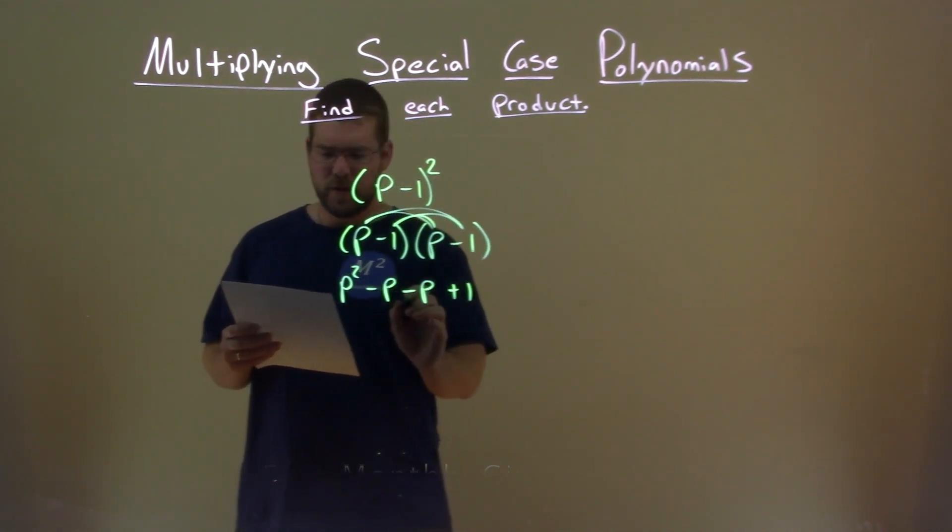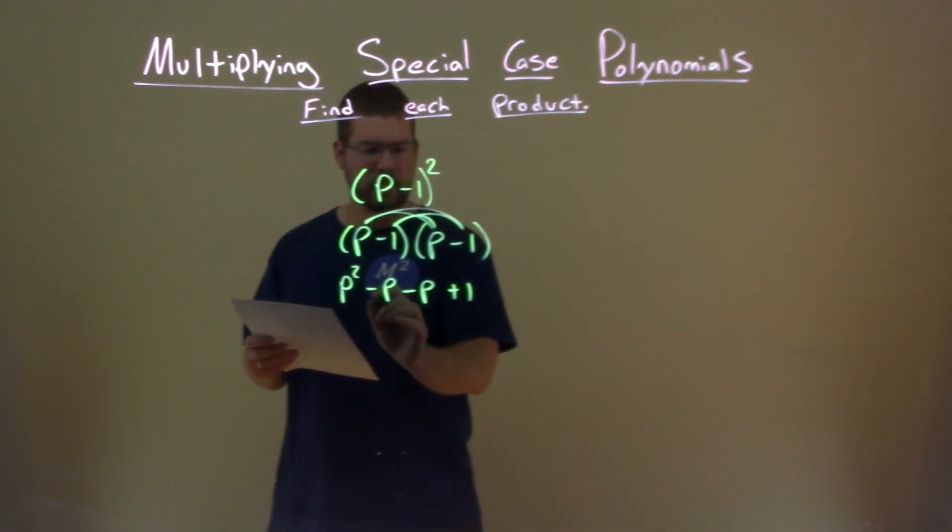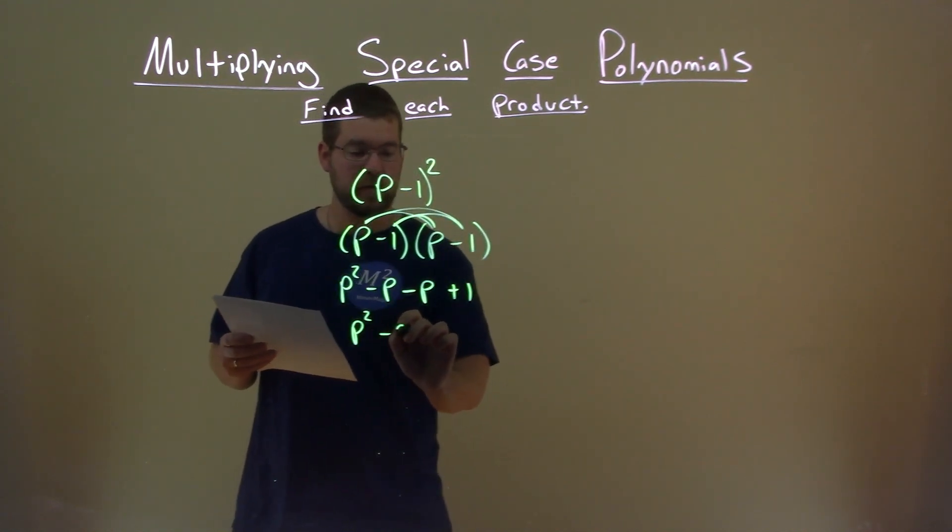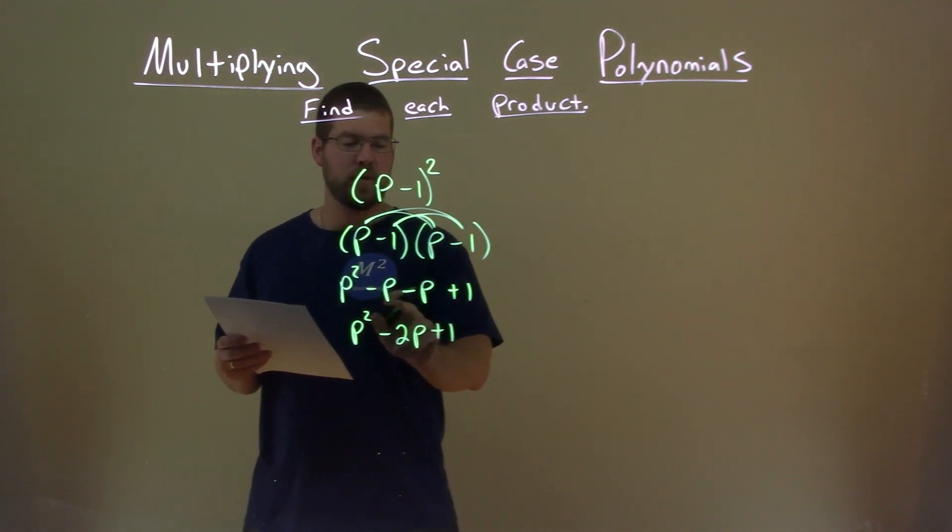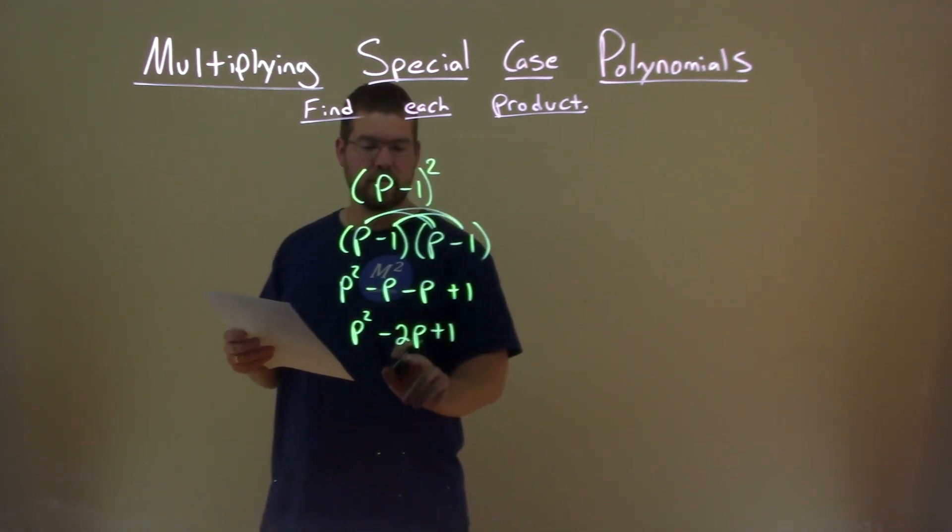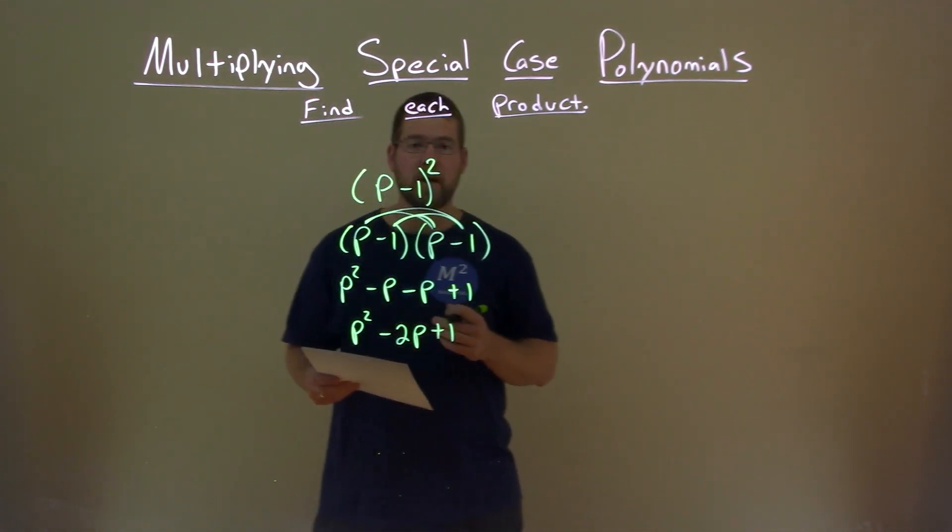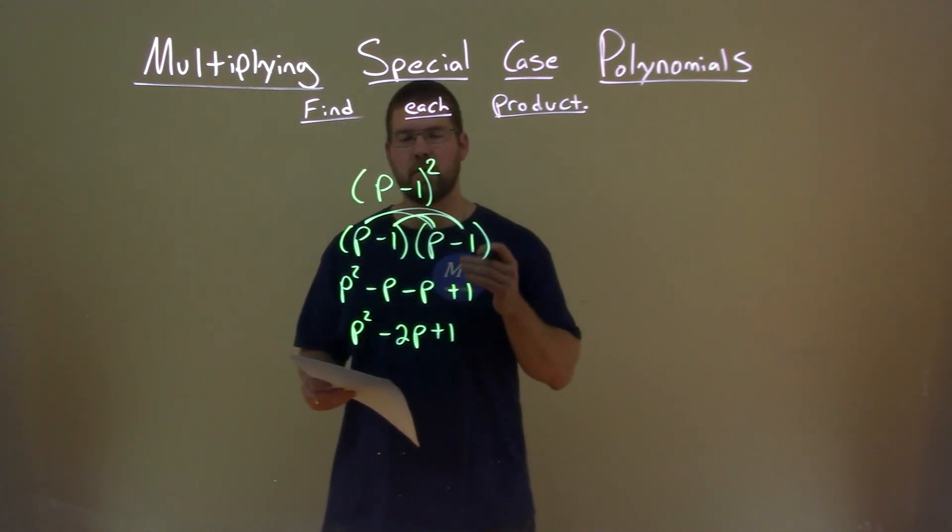Well, negative p minus p right here, that's a minus 2p. So we have p squared minus 2p plus 1. Negative p minus another p, that's a minus 2p. And there we have our final answer: p squared minus 2p plus 1.